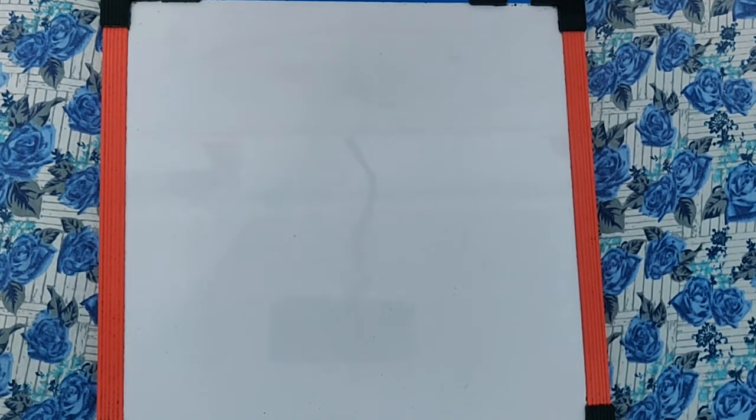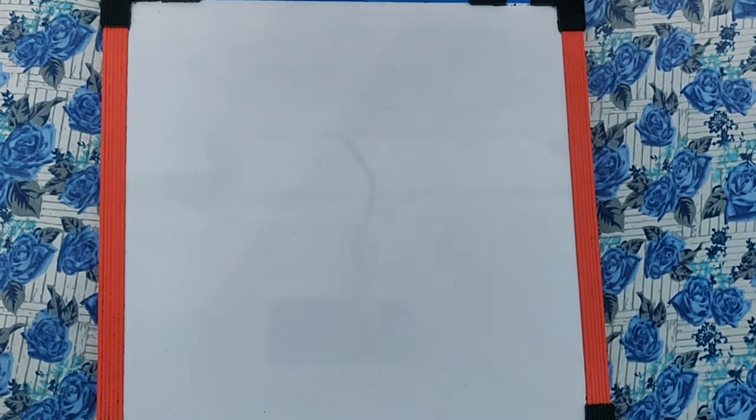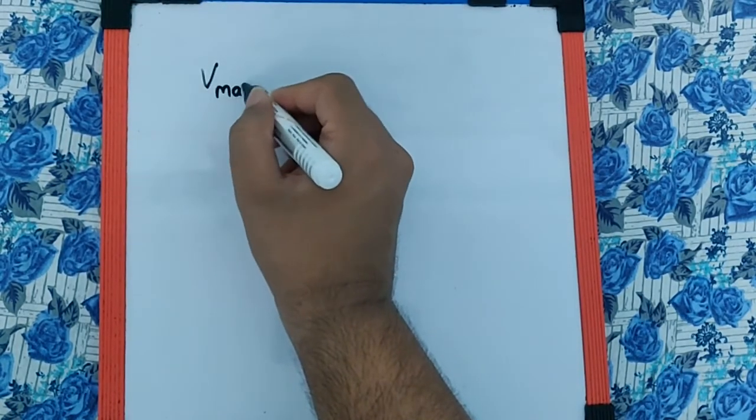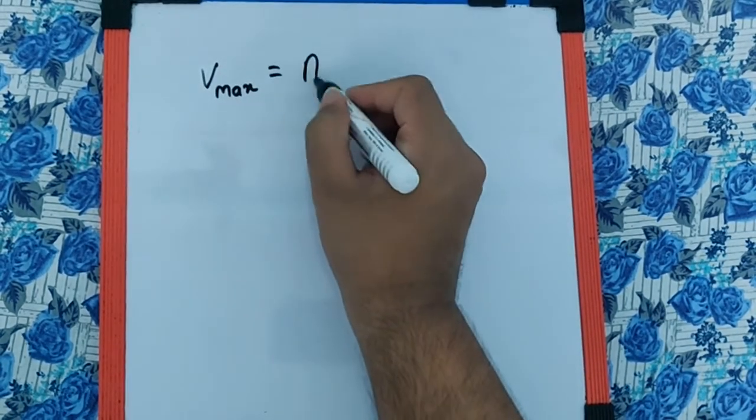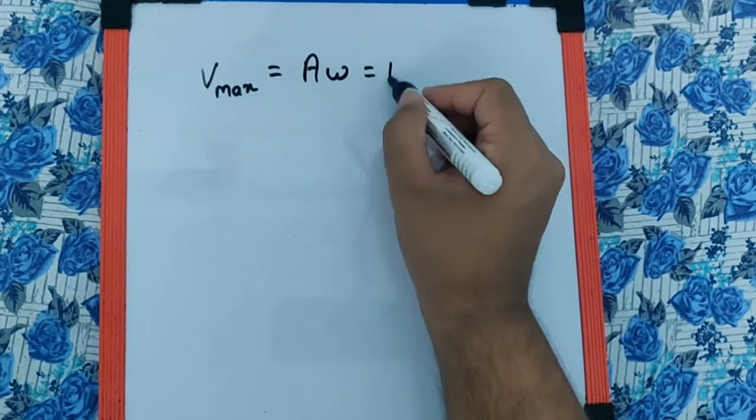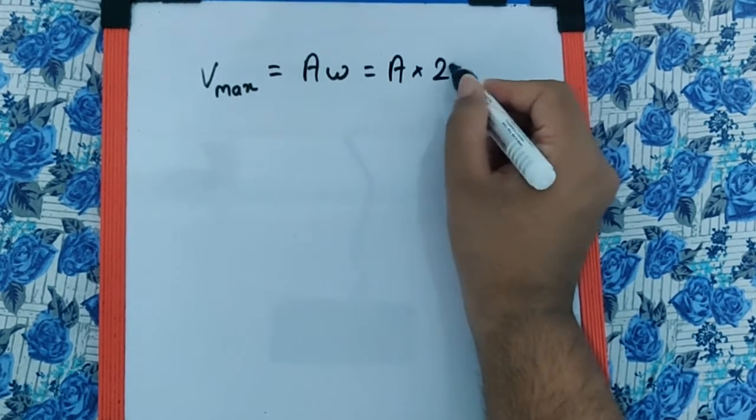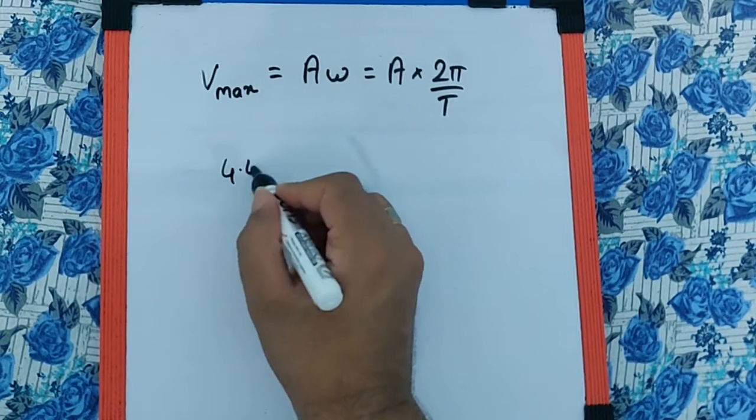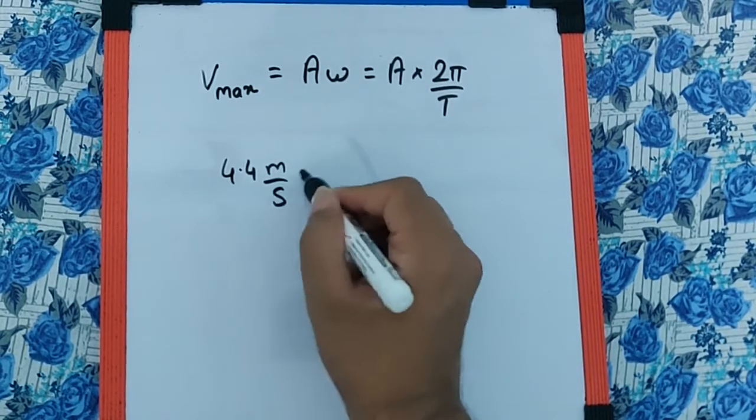We know the maximum velocity formula is A×ω, which can be written as A×2π/T. Given v_max = 4.4 m/s and amplitude = 7 mm, we write: 4.4 m/s = 7 mm × 2π/T.